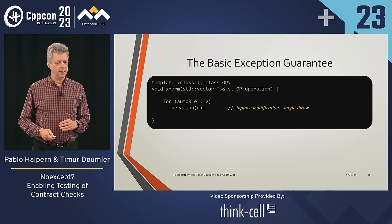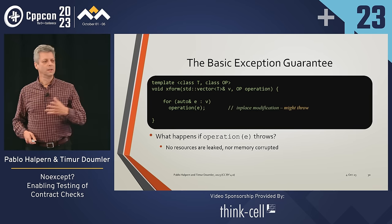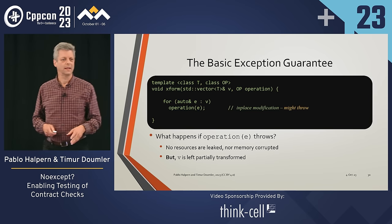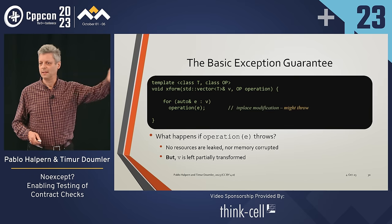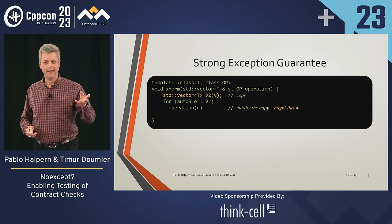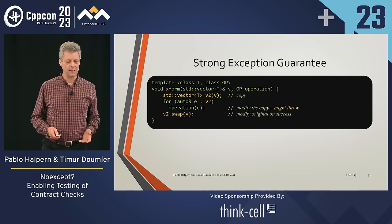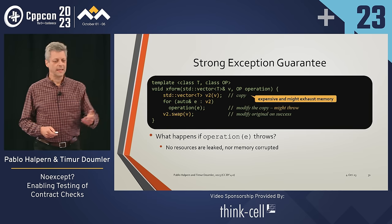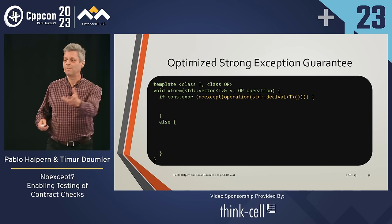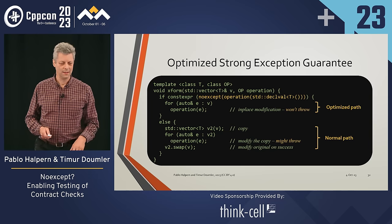For the basic guarantee, we loop over elements and call our operation; if it throws, nothing leaks but V is in a partially transformed state. For the strong guarantee, we make a copy of V first, operate on the copy, and if all transformations work, swap it for the original. That's more expensive and might exhaust memory. noexcept is used to optimize this strong-guarantee condition: if the move won't throw, we do the simple move; if it might throw, we go through copy-then-swap.